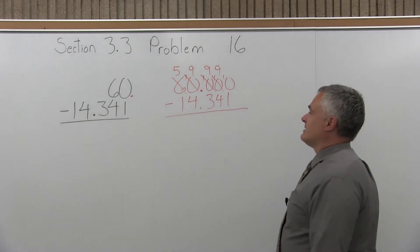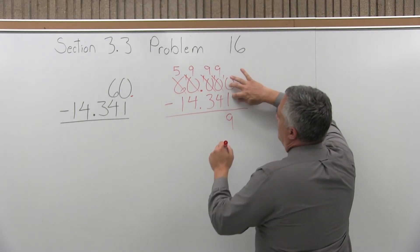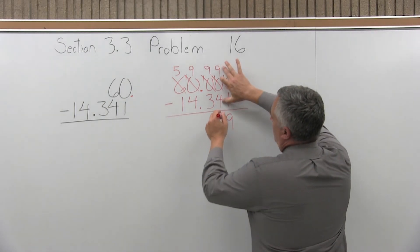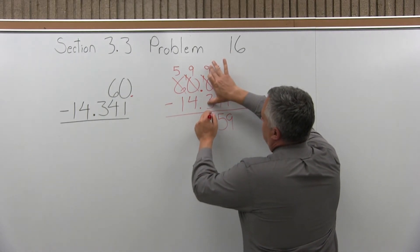Now we can start subtracting. So we have ten minus one in the far right column, that's nine. Next column, nine minus four, that's five. The next column over is nine minus three, which is six.